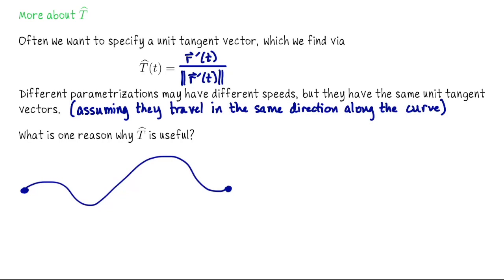So if you and your friend parametrize the same curve from point P to point Q two different ways, you may have different velocity vectors, but you would have the same unit tangent vectors.